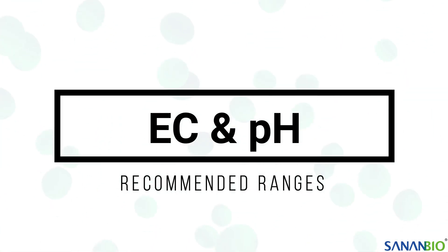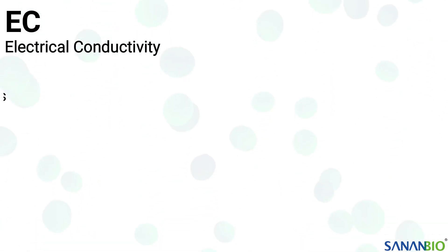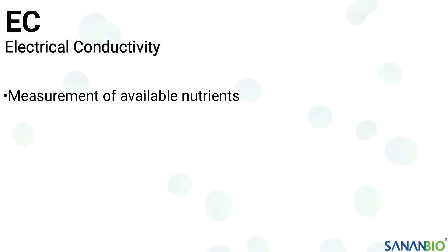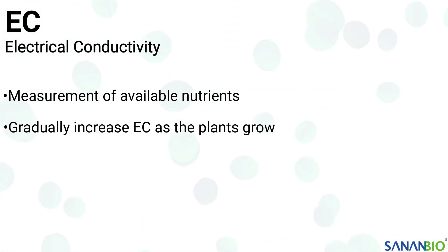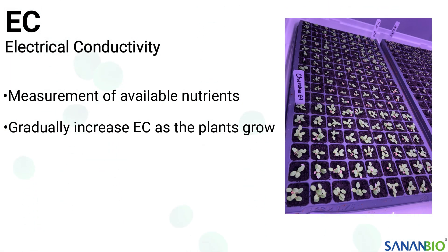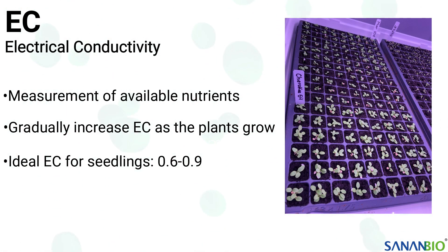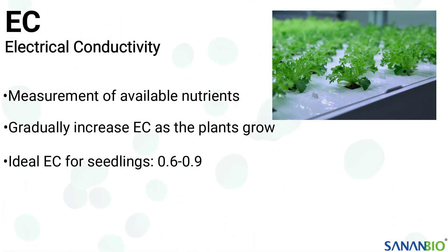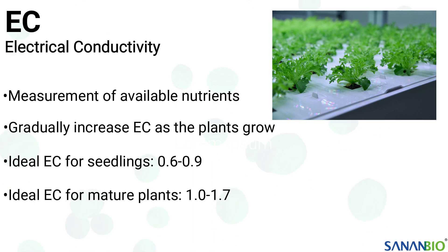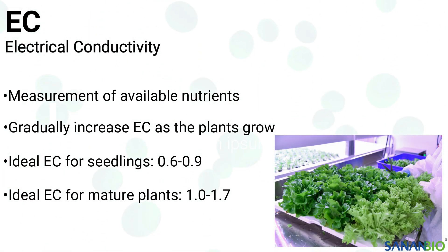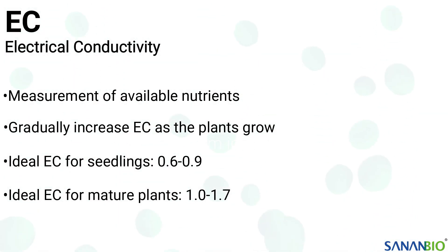The level of available nutrients in hydroponic systems is determined by reading the water's electrical conductivity, or EC. You will gradually want to increase the EC of your water as the plants grow. Seedlings and younger plants should be started at an EC of 0.6 to 0.9. As the plants mature, the EC should be increased to and maintained at 1 to 1.7 depending upon your plant selection.